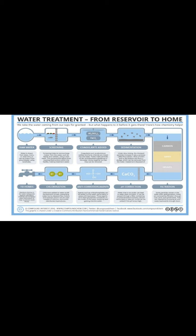Water is drawn from lakes, rivers, and reservoirs, or can be drawn from groundwater using boreholes for raw water. The first treatment is screening. Screening helps to remove large matter from the water such as leaves and rubbish. Wire mesh is used in screening. This prevents debris from causing obstructions within the facility.